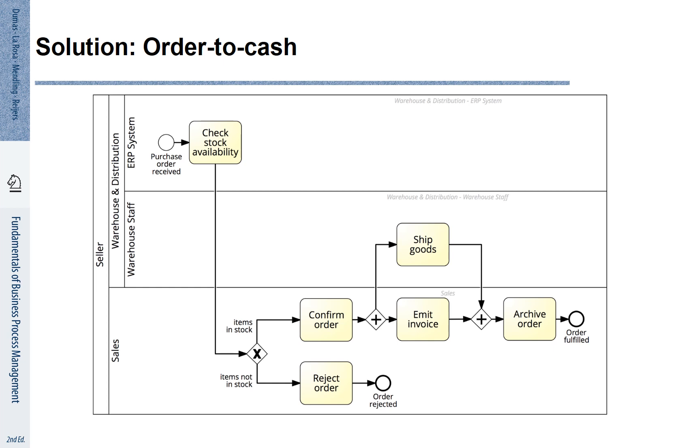We observe that the purchase order is received by the ERP system, which automatically does a check of stock availability. The Sales department then takes over and determines if the items are in stock. If so, they confirm the order, they emit an invoice and they notify the Warehouse staff to ship the goods. The order is then archived and fulfilled. The Sales department is also responsible for rejecting orders. We can clearly see who is responsible for which activity here.